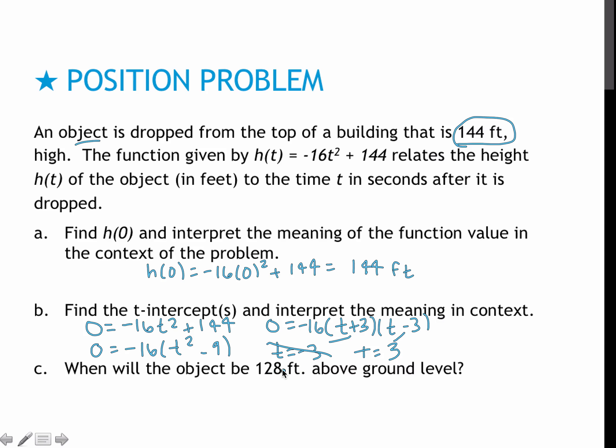For part c, when will it be 128 feet above the ground? So hopefully it's before three seconds because otherwise it has bounced back up and we've got a weird object that we're dropping. So again, I'm going to set it equal to 128. Everything else stays the same. I'm going to subtract the 128 from each side. That gives me zero equals negative 16t squared plus 16. That factors into t squared minus 1, which gives me (t plus 1)(t minus 1). Again, my first solution would be t equals negative 1, which does not make sense. My other solution would be t equals 1, which means at one second, the object is 128 feet above the ground.